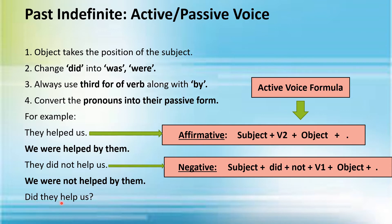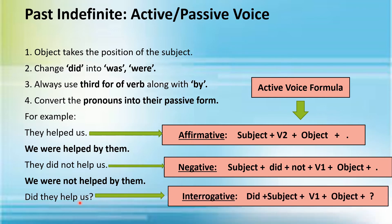Now, 'Did they help us?' — this is the interrogative sentence of past indefinite tense. We shall convert it into its passive voice form. It would look like this: 'Were we helped by them?' You can see I have followed all four points and converted the given active voice sentences into their passive voice forms.